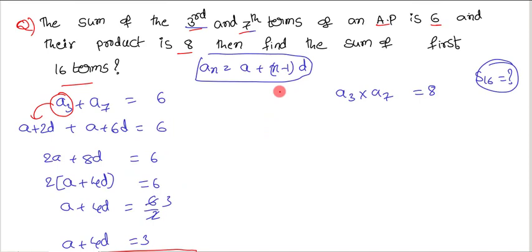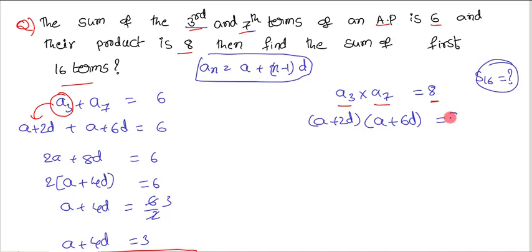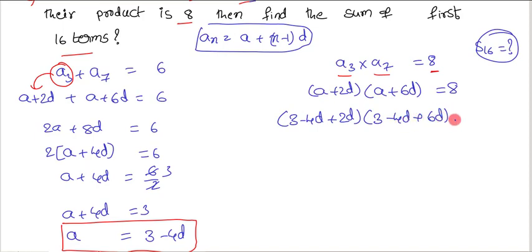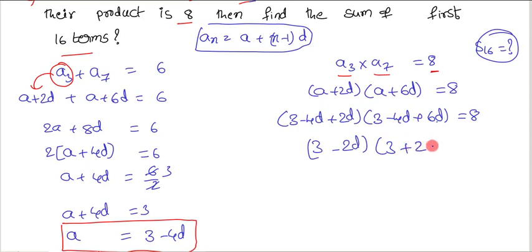Now let us use the product condition. The product of the third term and seventh term is 8, so (a + 2d)(a + 6d) = 8. Substituting a = 3 − 4d, we get (3 − 4d + 2d)(3 − 4d + 6d) = 8, which simplifies to (3 − 2d)(3 + 2d) = 8.